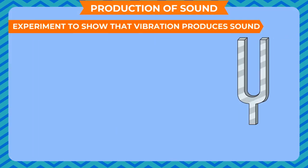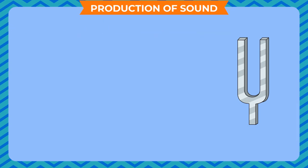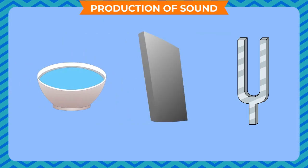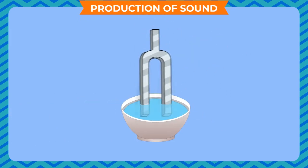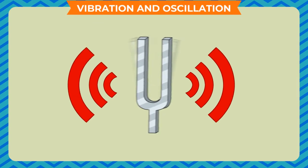Experiment to show that vibration produces sound. Take a tuning fork, a pad, and a beaker of water. Hit the fork against the pad and put it in the beaker of water. We notice that water begins splashing, showing that vibration is being produced. As vibration is produced, a humming sound is also produced. Thus, it is clear that vibrations produce sound.